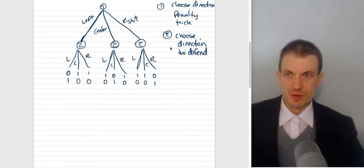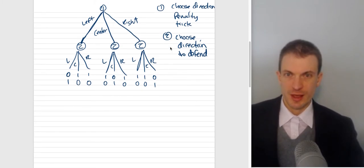So suppose we have two players. We can think of our players in a football or American soccer game. And so we have players choosing left, center, or right for the penalty kick. Player one would be the person making the kick. And then player two would be the goalkeeper deciding whether to defend left, defend center, or defend right. So player one is choosing the direction of the penalty kick. Player two is choosing the direction to defend.